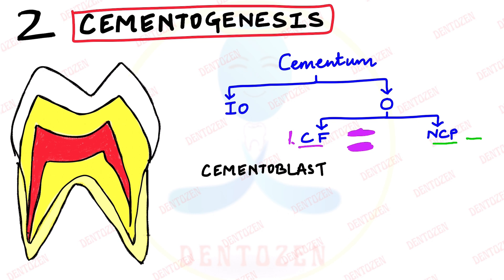In the second step, non-collagenous proteins come in between these collagen fibers. The third step is mineralization: the inorganic material, controlled by non-collagenous proteins, determines where minerals are deposited on the collagen fibers. Those are the three steps. However, the collagen fibers formed by cementoblasts alone are not enough — the cementoblast takes help from fibroblasts in the adjacent periodontal ligament.